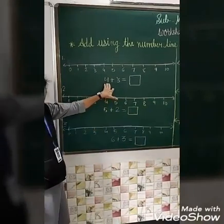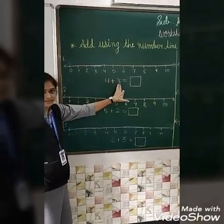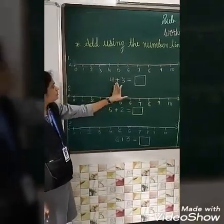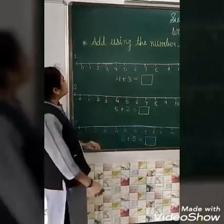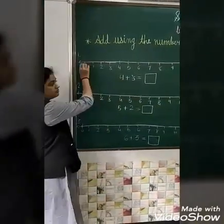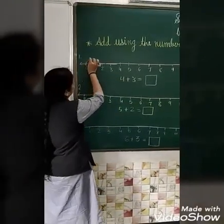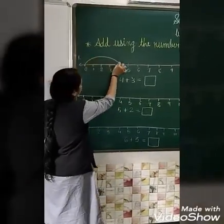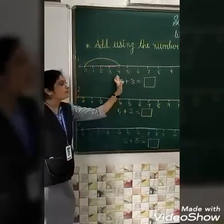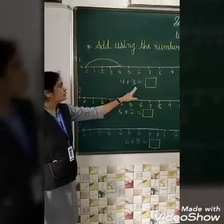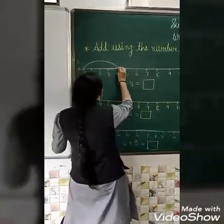Here we have which number? The number is 4 plus 3. First number is 4. So here we go starting from 0, we go to 4. Then we jump 3 numbers.